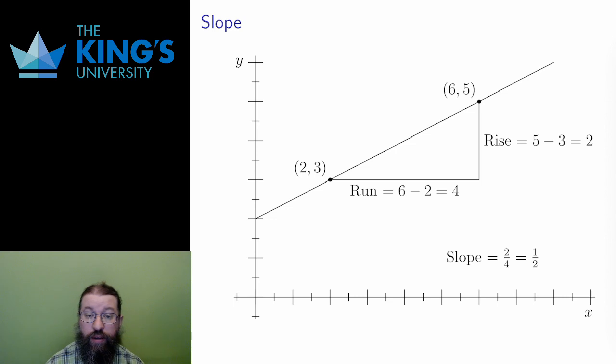Here is a line. This line goes to the points 2,3 and 6,5. I can define the slope of this line using these two points. First, I calculate the difference in the y-coordinates, which is often called the rise of the line. Here, that difference is 2.